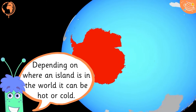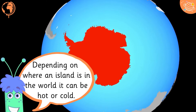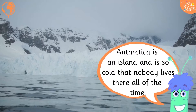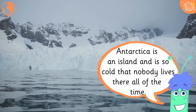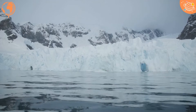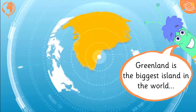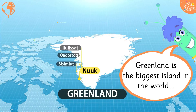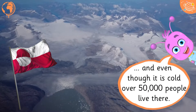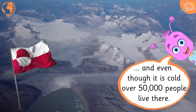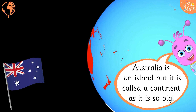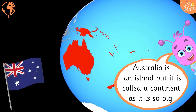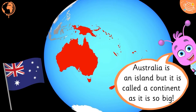Depending on where an island is in the world, it can be hot or cold. Antarctica is an island and is so cold that nobody lives there all of the time. Greenland is the biggest island in the world, and even though it is cold, over 50,000 people live there. Australia is an island but it is called a continent as it is so big.